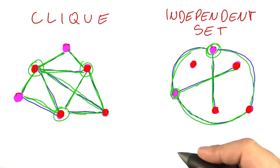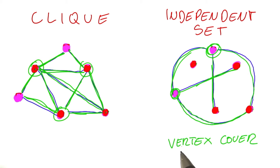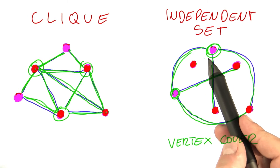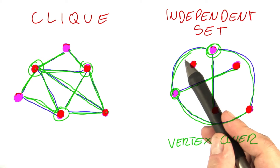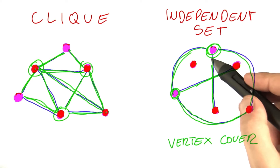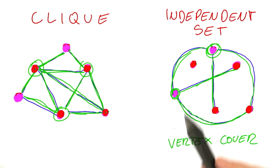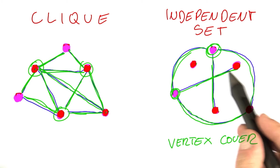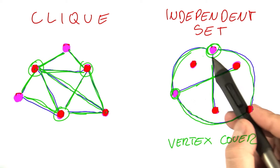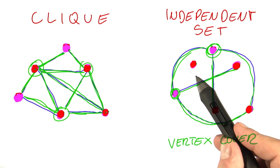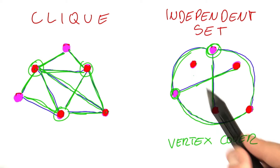If you consider an independent set versus a vertex cover, what you have is the following. If you have the smallest possible vertex cover, that means you have selected a minimum number of vertices so that each edge is next to at least one of those vertices. If you were to remove those vertices from a graph, then no edges would remain because every edge is connected to at least one of those vertices of the vertex cover. So what remains is always an independent set. And since you've selected the smallest possible vertex cover — the smallest number of vertices you need to remove — what remains must be the largest, or a largest, set of independent vertices.